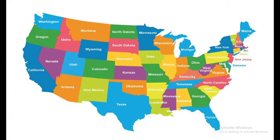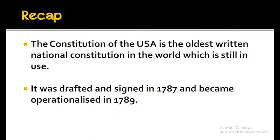Let us begin with a view of the political map of the United States. As we all know, the United States is made up of 50 states or units. To recap a little bit of what we had discussed in the previous lecture, the Constitution of the United States is the oldest written national constitution in the world which is still in use. It was drafted back in 1787, signed in the same year, and became operationalized or has been enforced since 1789.